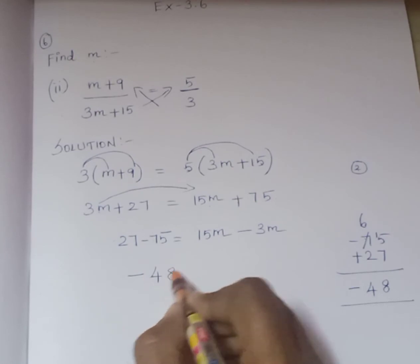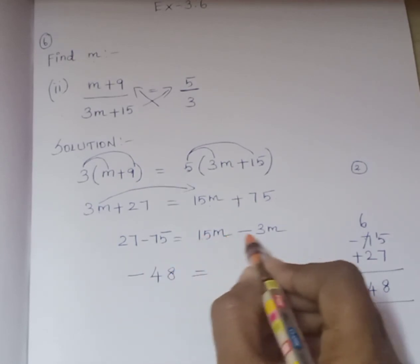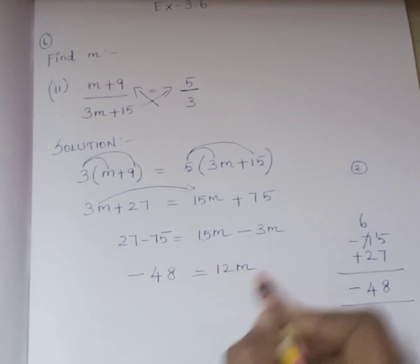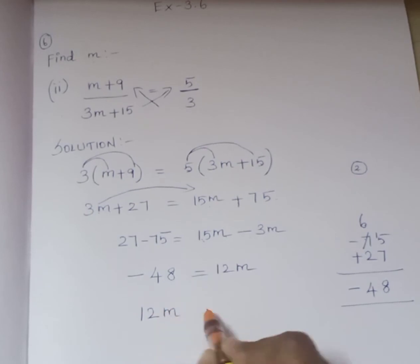Minus 48 is equal to 15m minus 3m, which is 12m. So we have an equation to find the m value. That is 12m = -48.